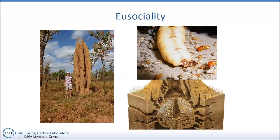We can see soldiers here — bigger individuals there for defense — and little regular medium workers who probably go out and collect wood and plant material on which to cultivate their fungus. Here we have a giant queen, the most noticeable of all the castes — she looks like a giant sausage. She could be as large as six inches in size and is essentially a gigantic sack of eggs. There's her head, her thorax, and her abdomen. She's kind of like the queen from the Aliens movie — the Alien Queen.